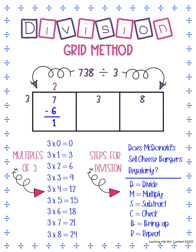Next step is check — this is important because you don't want too many remainders at the end. Each time you finish a whole step, check that your answer is not bigger than your divisor. My 1 is smaller than 3, so I'm good. Now it says bring up: we take that 1 and bring it up to match with our 3 to give us 13.